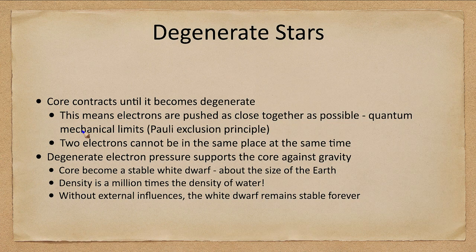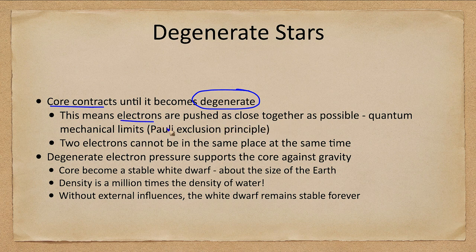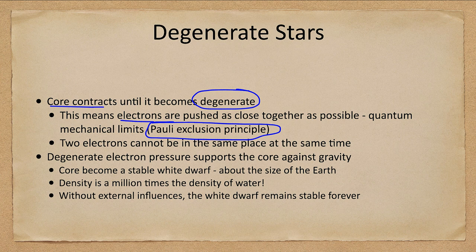What happens to the material is that the core contracts until it becomes degenerate. Degenerate matter means that the electrons are pushed as close together as possible. This is what we call the Pauli exclusion principle, which essentially says that two electrons can't occupy the exact same state at the same time. So it is a quantum mechanical limit, and that then produces a pressure to hold the star up.